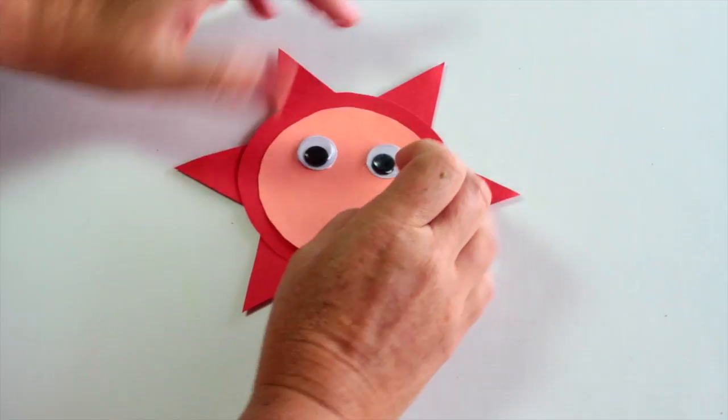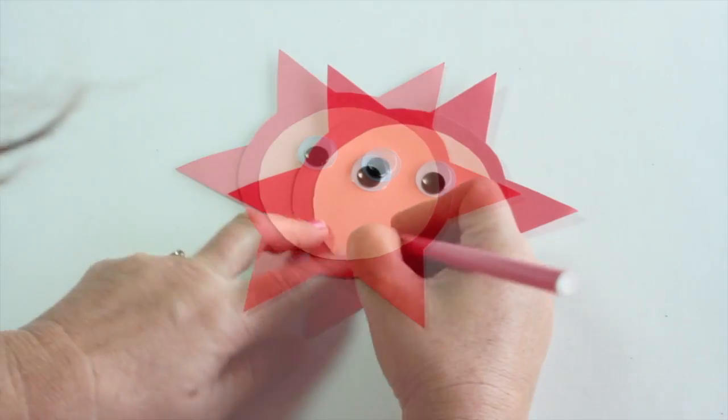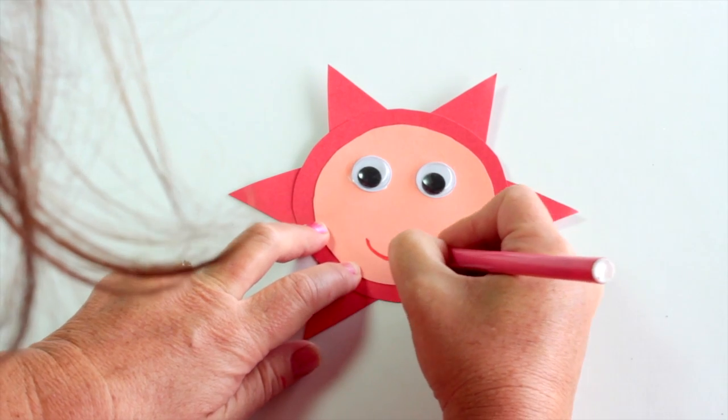Add a dab of glue onto the googly eyes and stick them onto the wand. Draw a smiley mouth with a felt pen.